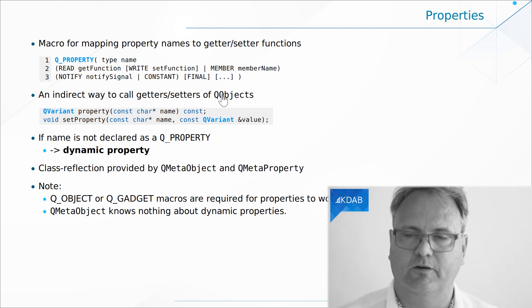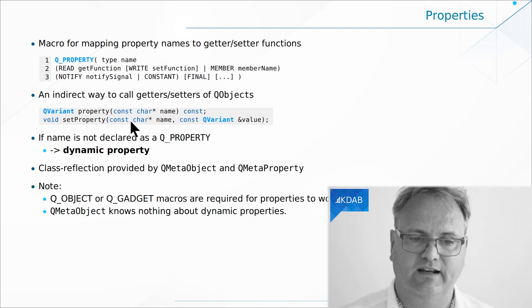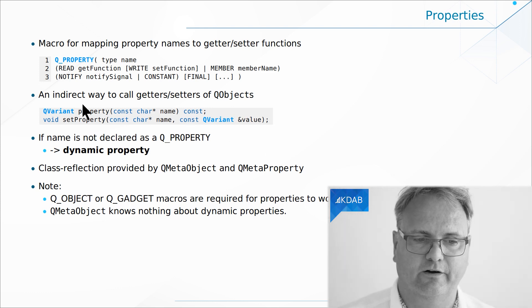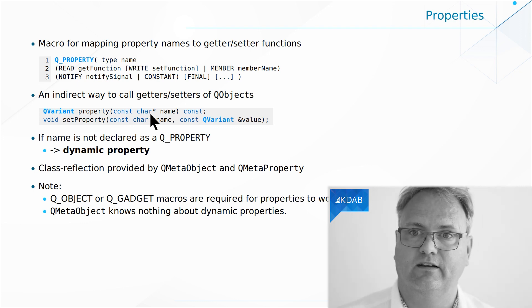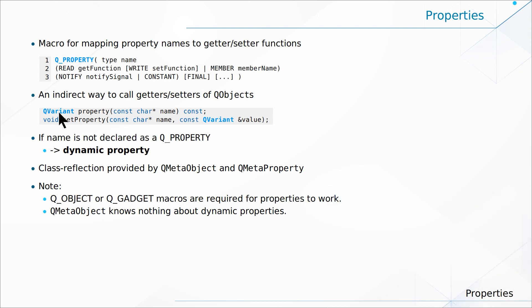My QObject subclass offers two methods. One is called setProperty, taking the name of the property and the property value, and then it sets that property. The other is called property — that is how you read the property. It takes the name of the property you're interested in and returns it as a QVariant. But how does that make it into the setText method of my QQuickText element?